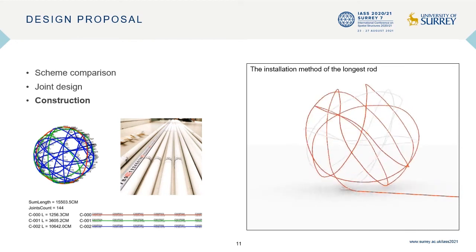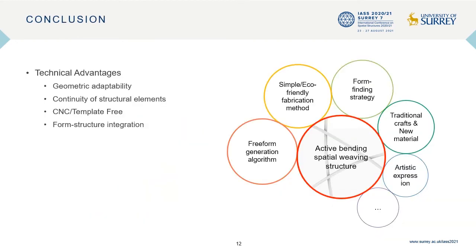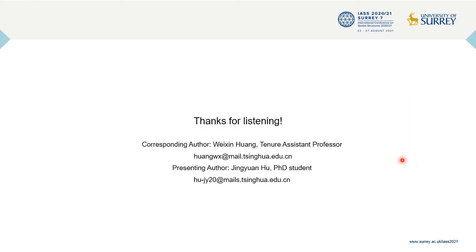In conclusion, by a general generation algorithm through the form-finding process of interwoven rods, the weaving structure can be used for construction of a great variety of freeform geometries using only off-the-shelf rods and uniform joints, without complex CNC machines. It makes a good balance between structural soundness and ease of construction, and can work as a form-structure integrated system. It also combines digital designing with traditional handicraft and is interesting in art. Thank you for listening, and we are looking forward to good questions and cooperation.